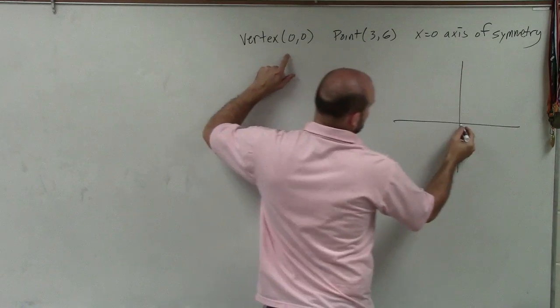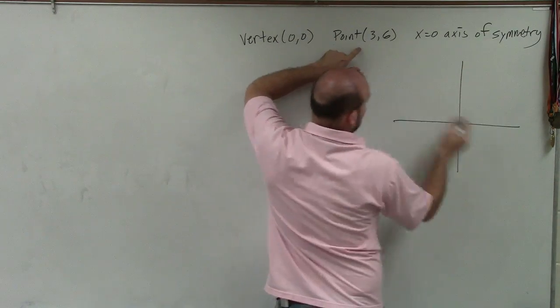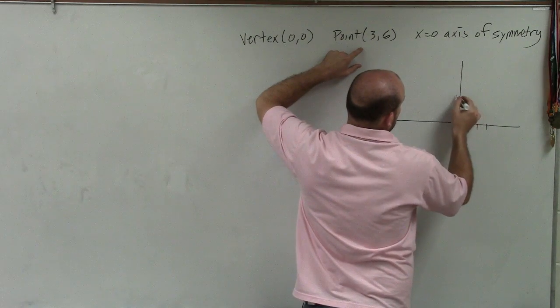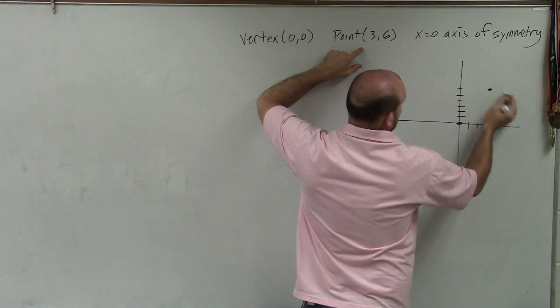So the vertex is at 0, 0. They're giving us a point at 3, 6. So 1, 2, 3, and 1, 2, 3, 4, 5, 6. OK?